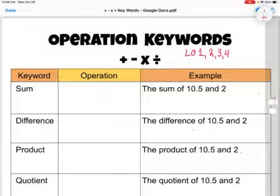Okay, so our first word is sum. Whenever you see sum, that means addition—we're adding two numbers. In our example, we have the sum of 10.5 (or ten and five tenths) and 2. I'll write the plus sign there. Something we like to do in math is annotate, so if I say sum, I'll write the plus sign.